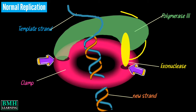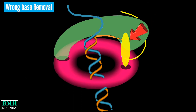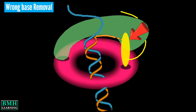When polymerase 3 inserts a wrong base, DNA synthesis slows down, allowing the exonuclease access to the DNA, resulting in the removal of the wrongly incorporated base in the strand being synthesized, shown in orange.